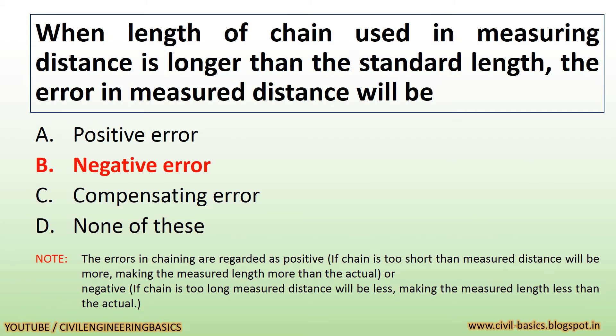When the length of chain used in measuring distance is longer than the standard length, the error in measured distance will be a negative error. Note: errors in chaining are regarded as positive if chain is too short, making the measured length more than the actual; or negative if chain is too long, making the measured length less than the actual.